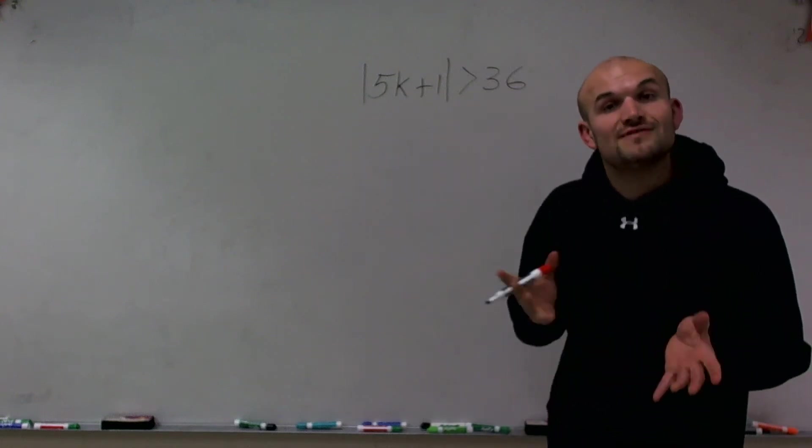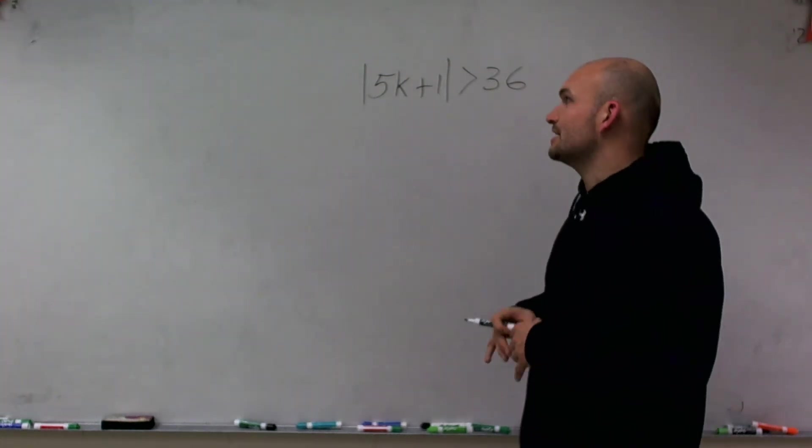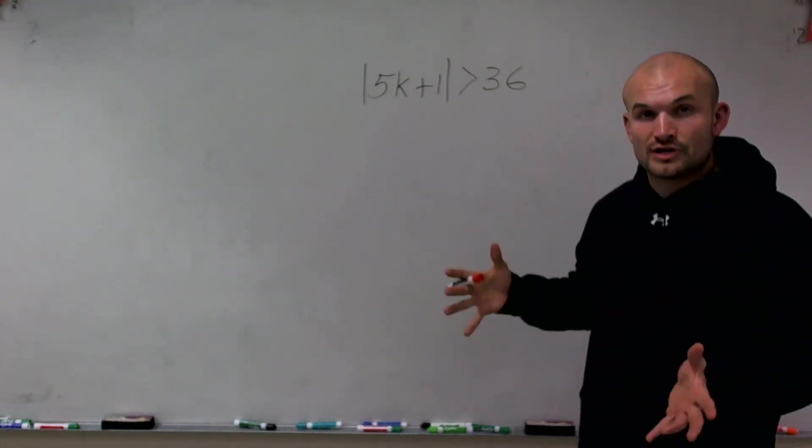So what I'd like to do is show you how to solve and graph an absolute value inequality. What I have up here is the absolute value of 5k plus 1 is greater than 36.